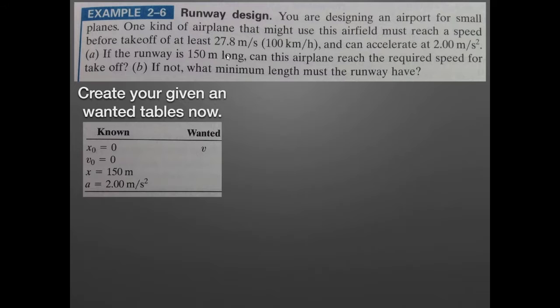So we need our given and wanted tables. Our known values are: the initial position of 0 (whenever I'm given a length of my trajectory, I can always assume the initial position is 0 and the final position is 150). Also, if an airplane is taking off, it starts at rest, so 0 meters per second for V0. We do not know the final speed, but we do know its acceleration, 2.0 meters per second squared. We're going to use the maximum acceleration. And we're going to find V.